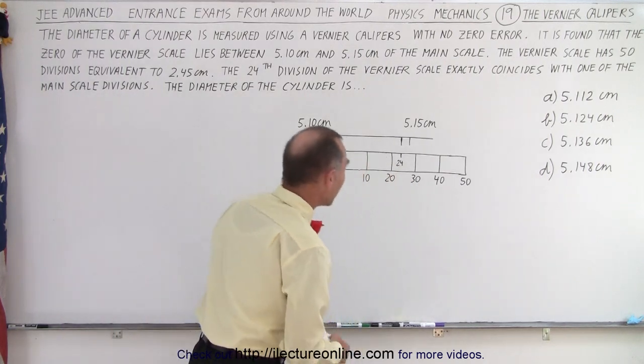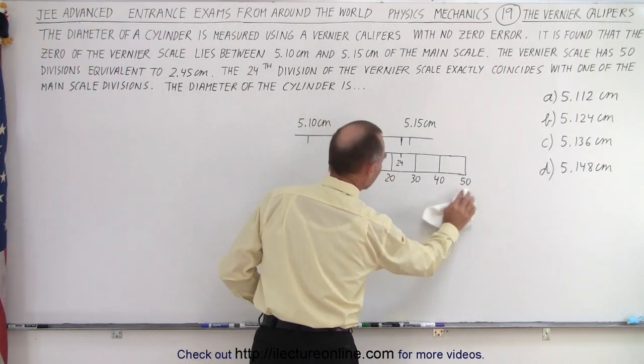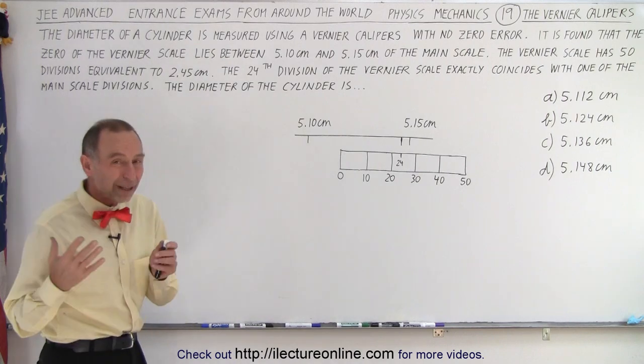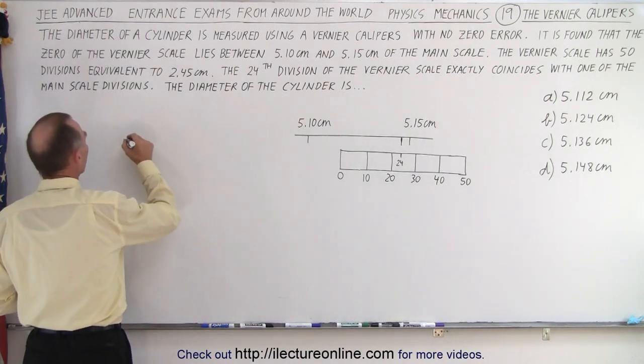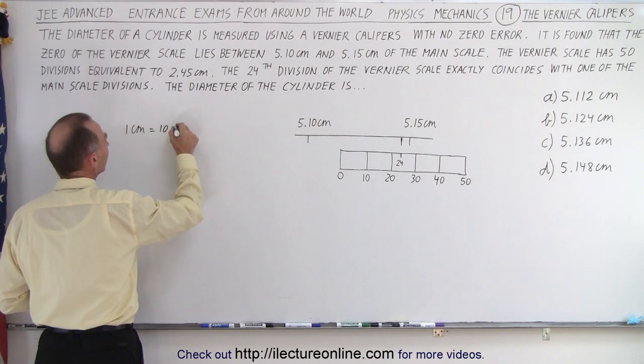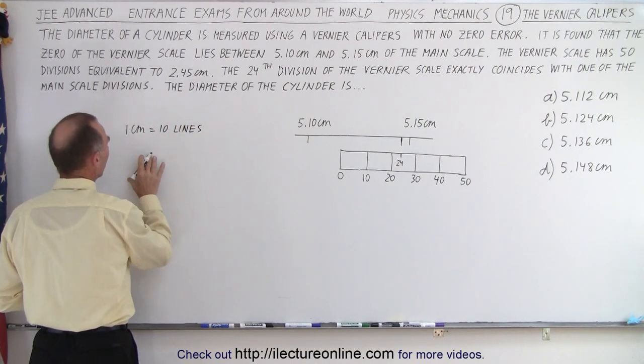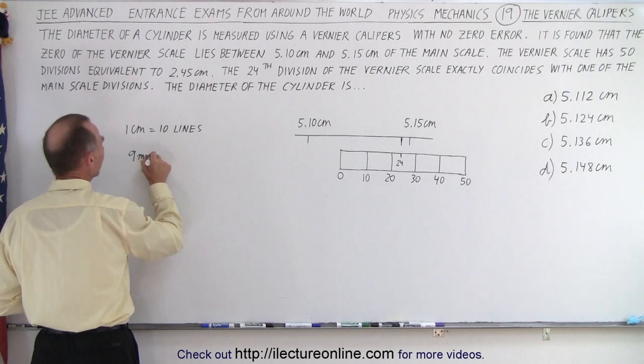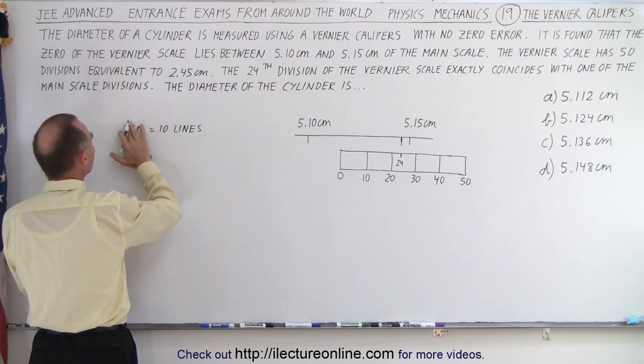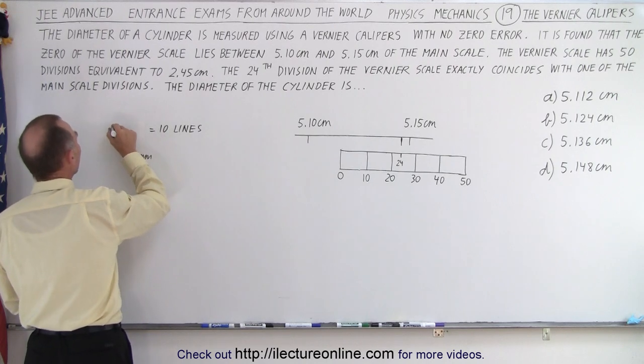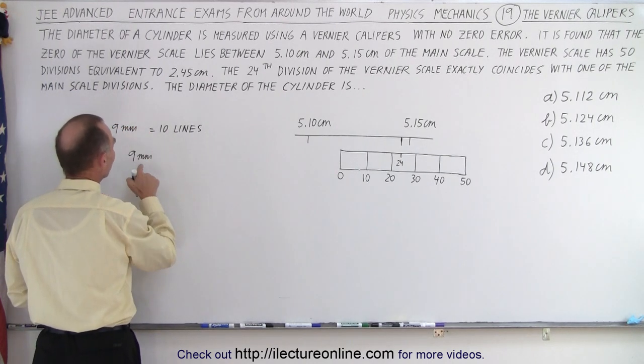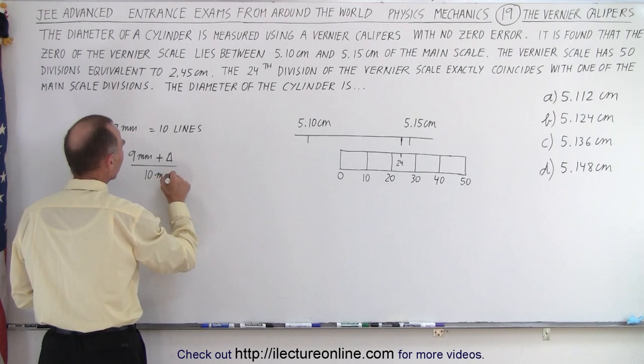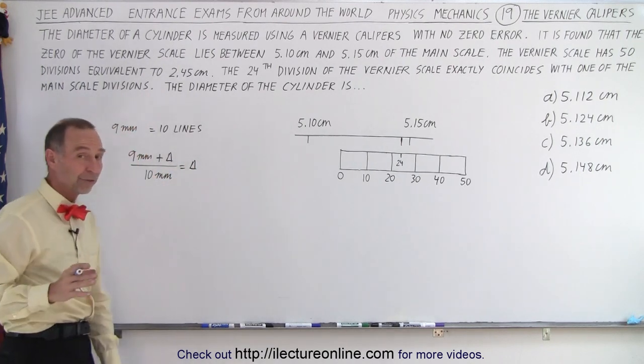So what is that delta equal to? With a vernier caliper, the way that works with a typical vernier caliper is we have typically one centimeter equal to 10 lines on the vernier scale. So what we do to get the delta, we say that 9 millimeters, because the 10 lines represent 9 millimeters. It's not the whole centimeter, but 9 millimeters coincide with 10 lines. So we take 9 millimeters plus delta divided by 10 millimeters equals delta. That's how we calculate the delta of vernier calipers.